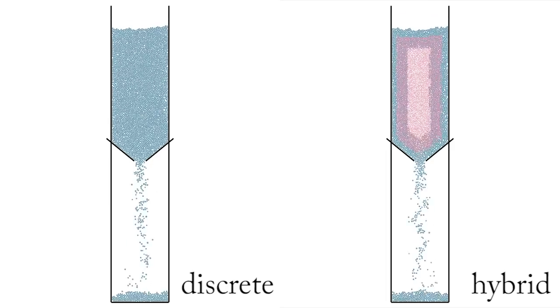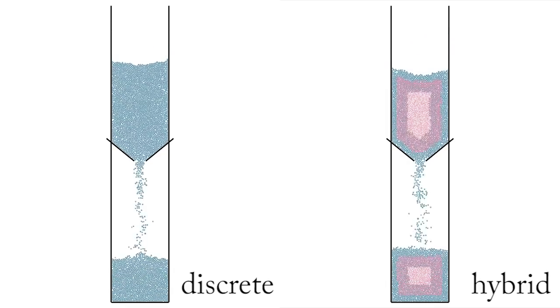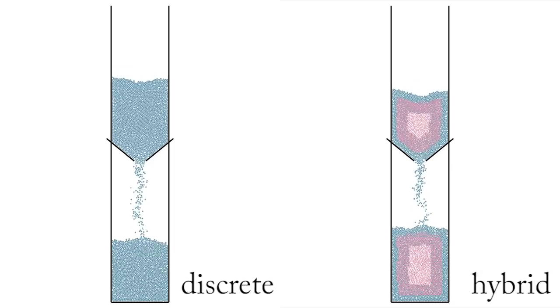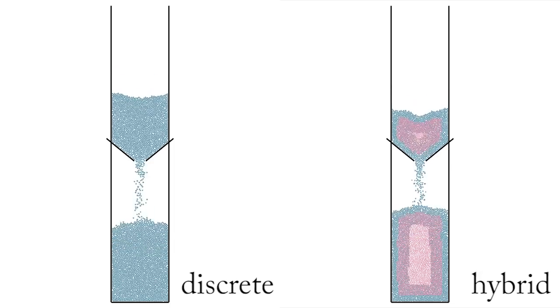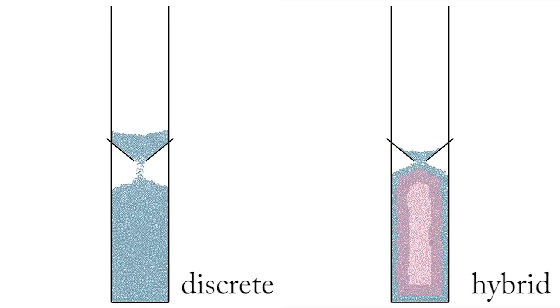In this silo discharge simulation, the hybrid method converts material from continuum to discrete at the orifice, and back to continuum on the ground. The discrete approach to modeling the falling grains allows us to capture the asymmetrical flowing shape, as well as the bouncing effect when the grains hit the floor.